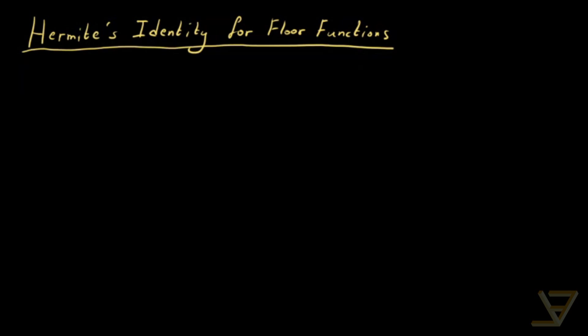Hi everyone. Today we're going to be talking about Hermite's identity, which is an identity that relates to floor functions. I'm going to be assuming that you're familiar with floor functions, so if you don't know the definition you should look it up and then return to this video. What we're going to be proving is that for all x in the real numbers and for all m in the positive integers, the following identity holds.